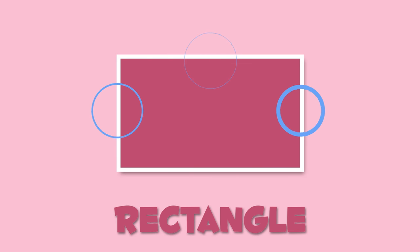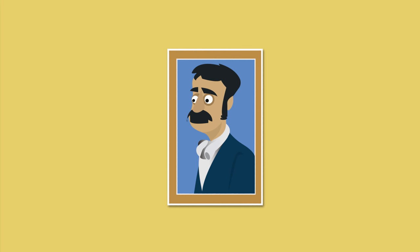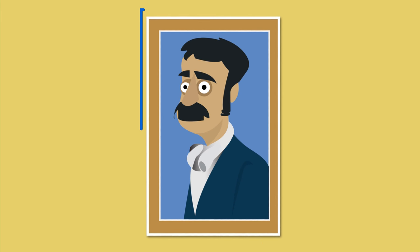This is a rectangle. It has four sides like the square, but they're not identical. Only its opposite sides are equal in length. A rectangle looks like this bill, or like this picture frame.